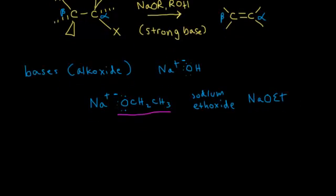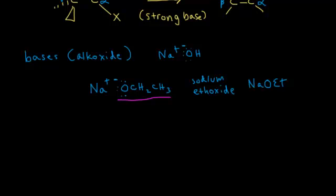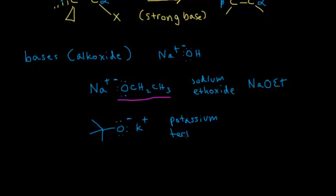Let's take a look at another possible base for an E2 elimination reaction. We have a tert-butyl group with a negatively charged oxygen, and the cation is potassium. This is called potassium tert-butoxide, abbreviated tBuOK. The tert-butoxide anion is the conjugate base to tert-butanol — if you protonate tert-butoxide, you get tert-butanol. These are two of the most commonly seen bases for E2 reactions.